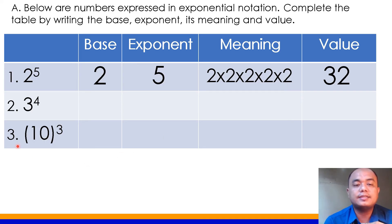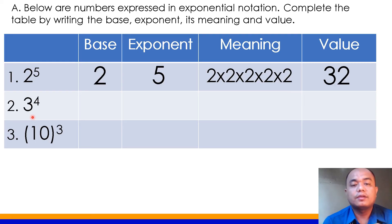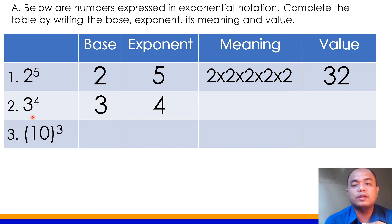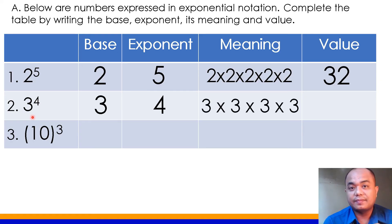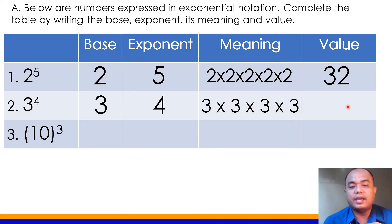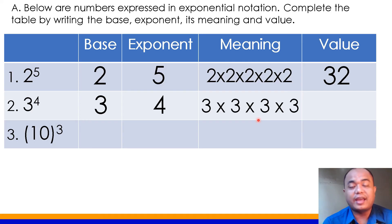Number 2 is read as 3 to the 4th power, or 3 to the exponent 4. Our base is 3 and our exponent is 4. The meaning of 3 to the exponent 4 is 3 times 3 times 3 times 3. To get the value, we multiply 3 four times: 3 times 3 is 9; 9 times 3 is 27; 27 times 3 is 81.